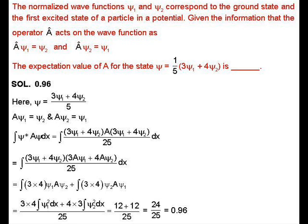For the normalized wave function, we know that integral of ψ*ψ in the space region equals 1, and for orthogonal wave functions, integral of ψ₁*ψ₂ dτ equals 0. Given that ψ = (3ψ₁ + 4ψ₂)/5, the expectation value of A equals integral of ψ*Âψ dx.